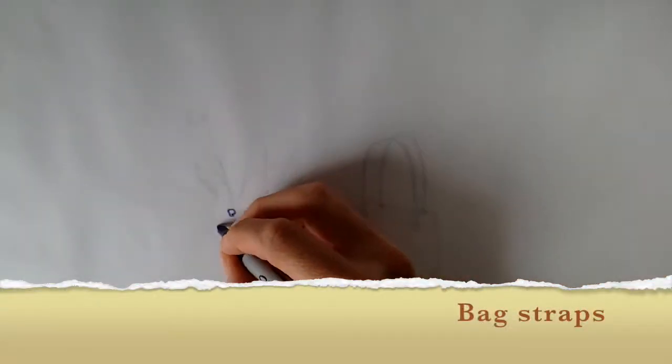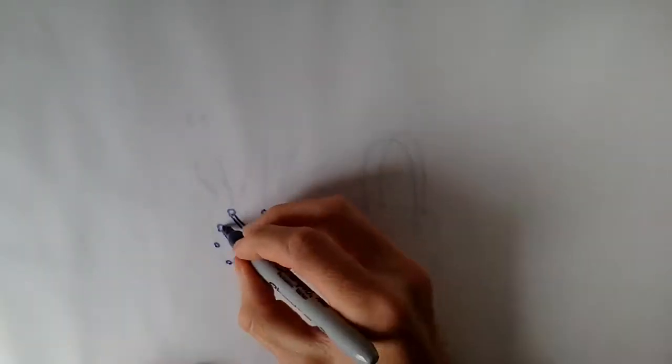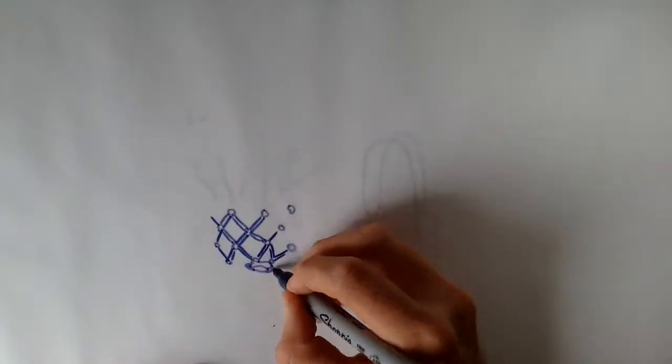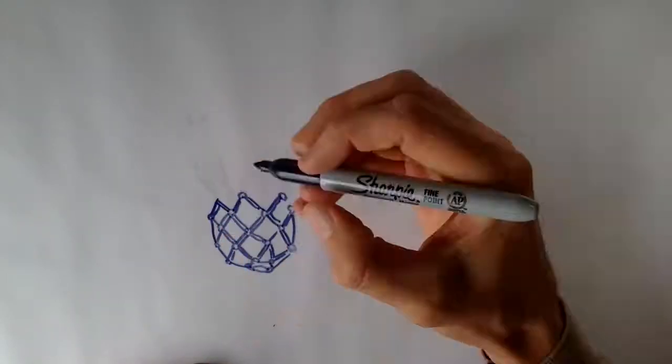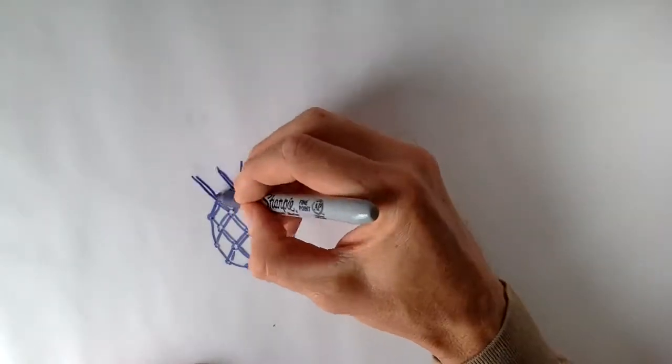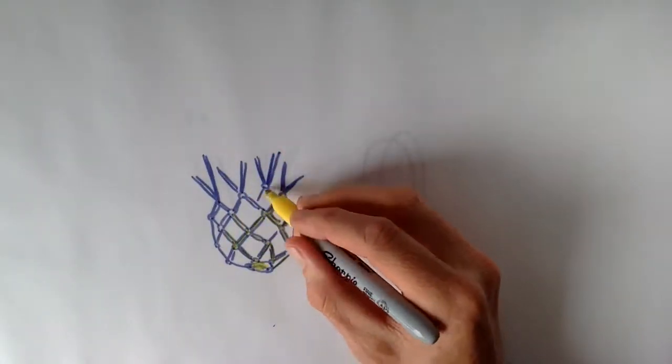At this stage of creating our reusable bag out of plastic, we have turned our plastic into rope, used macrame to give the rope shape and function, but we have not yet created straps for our bag.